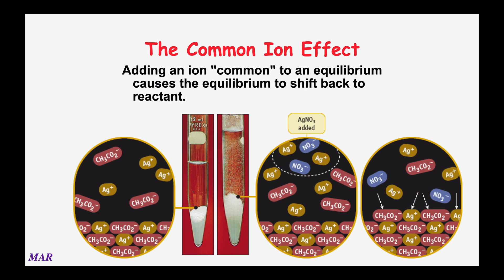When we talked about buffers in the last section, we used buffers and talked about the common ion effect, how you can use the addition of the conjugate to understand changes to pH. Well, we can use the common ion effect here with solubility as well. This is a really interesting phenomenon.